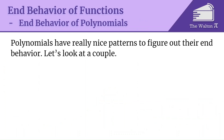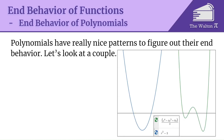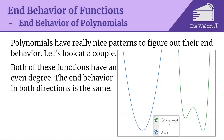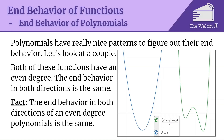Polynomials have nice patterns for determining end behavior. Looking at two polynomials — x² − 3 (degree 2) and x⁴ − 4x³ + 6x all over 3 (degree 4) — both head off towards infinity in both directions. Both are even-degree polynomials, so both directions do the same thing: they either both head to infinity or both head to negative infinity. The end behavior in both directions of an even-degree polynomial is always the same.